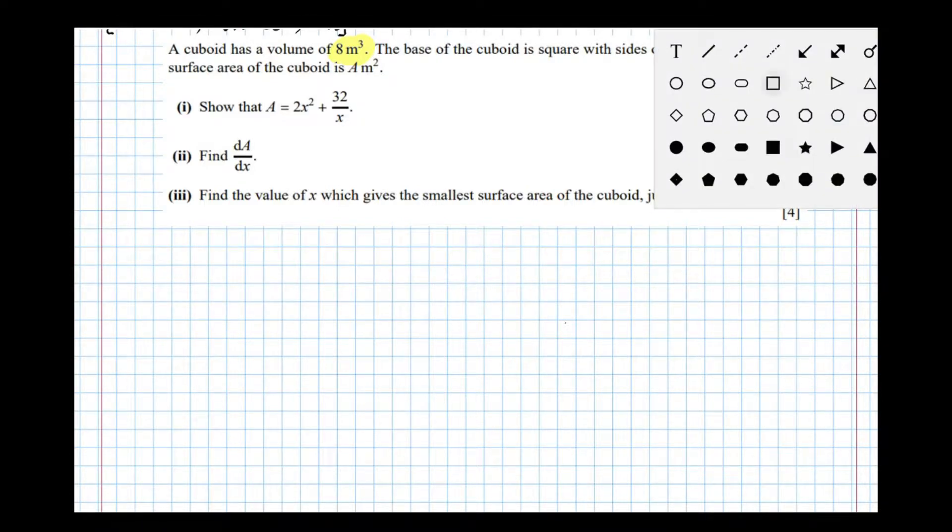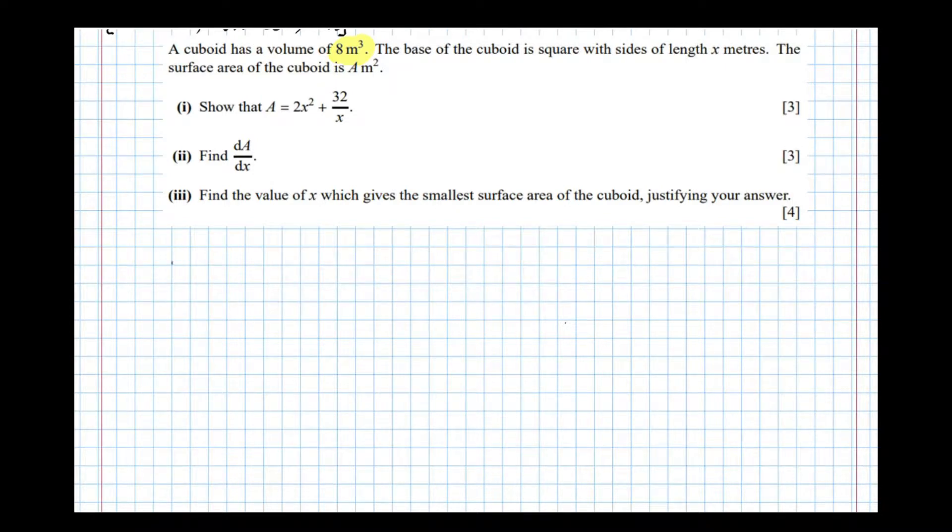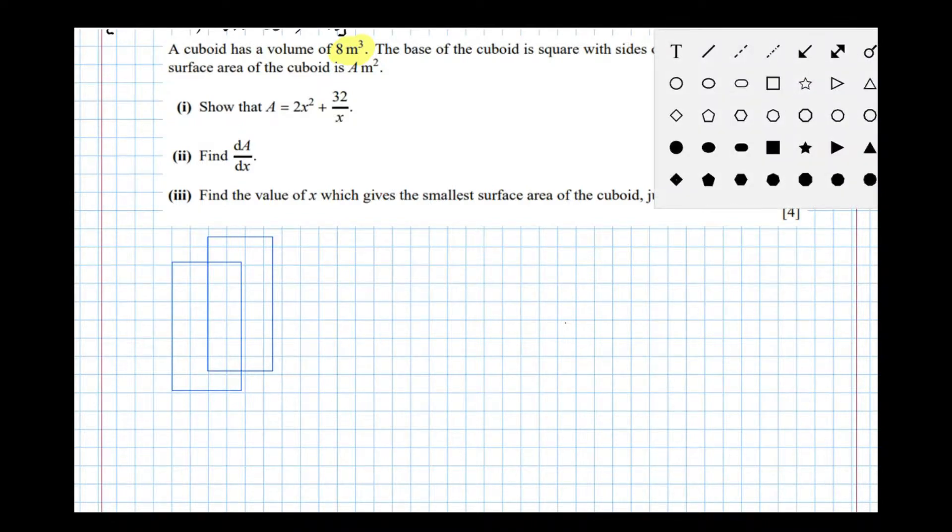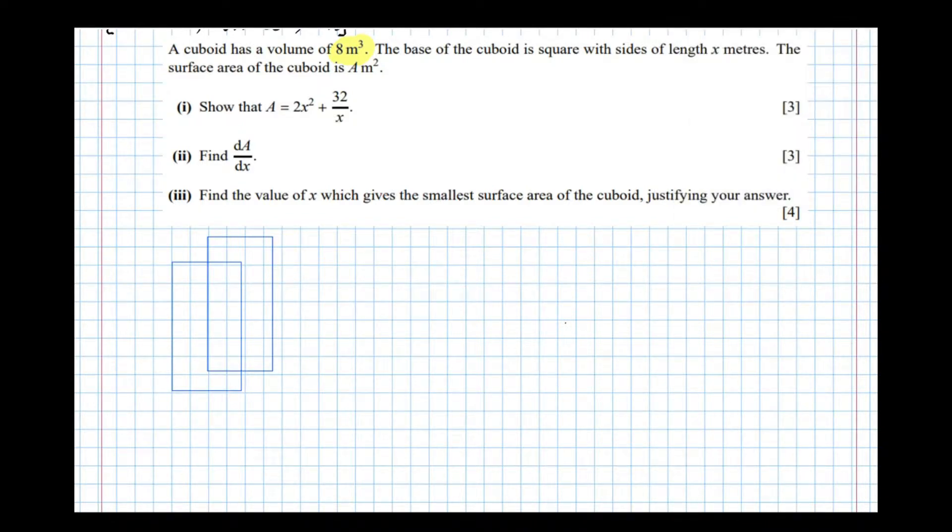So let's try and get this information in a diagram. Let's draw a cuboid with a square base. The best way to draw a cuboid is two overlapping rectangles, same size, then join the corresponding corners together. Like that. Not perfect but it'll do.